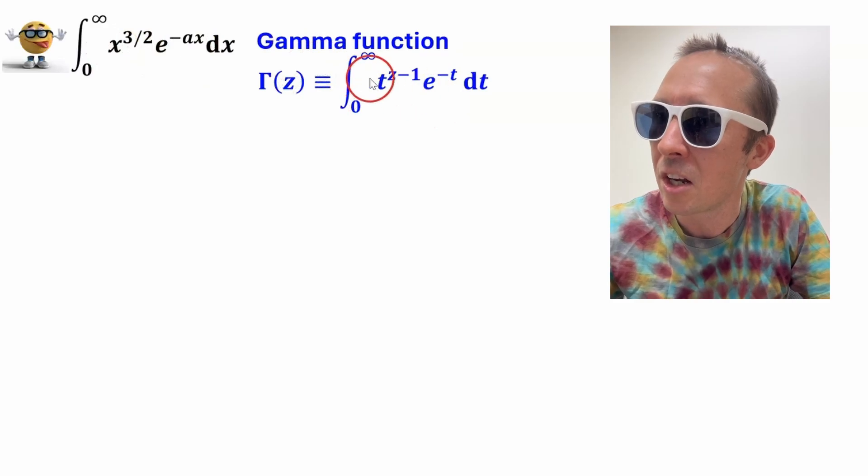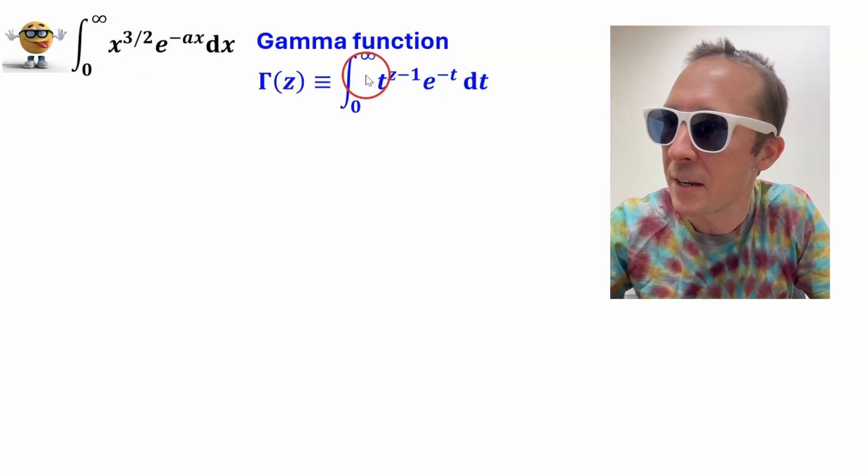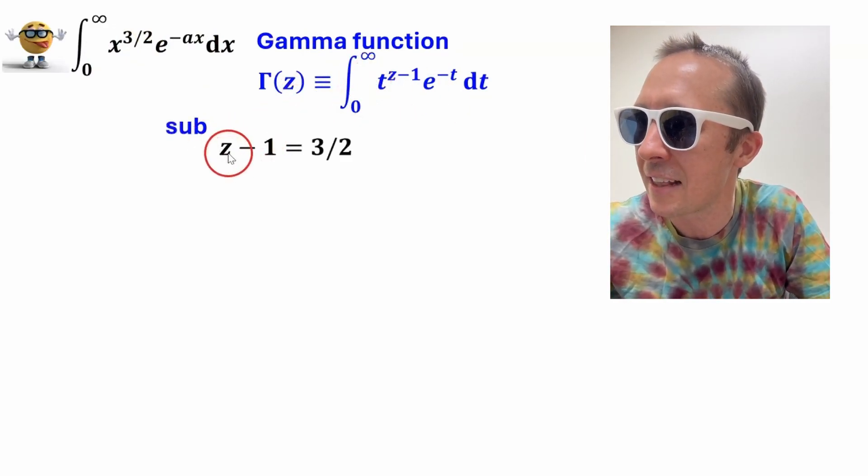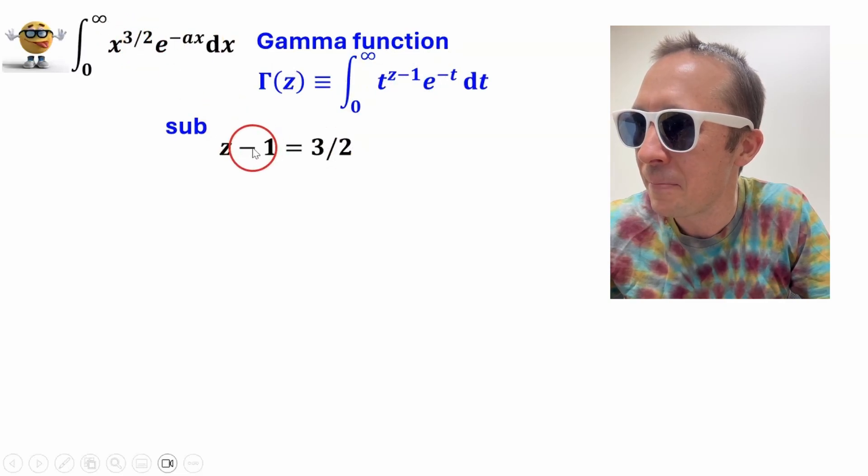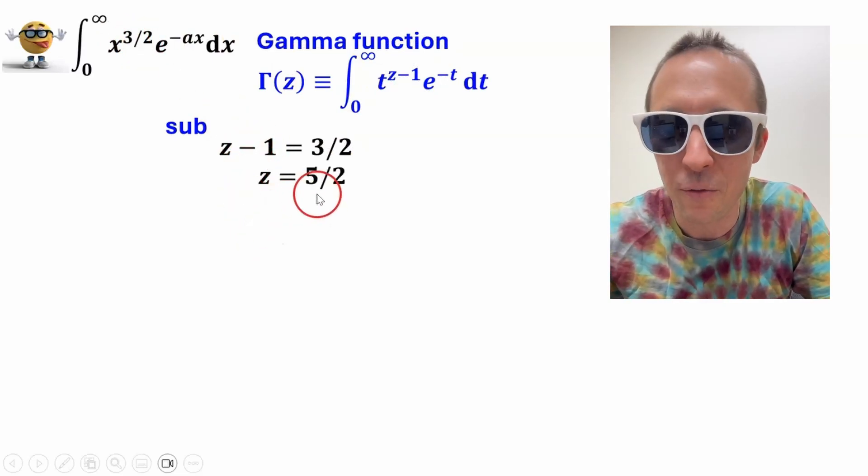we're going to make our integral look like the gamma function, so if we compare the two of them, we'll see that the z minus 1 equals this three halves right here, so z equals 5 over 2,